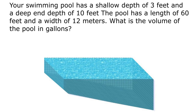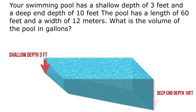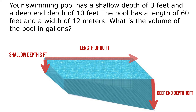Alright, let's go ahead and read our question on the volume of a rectangular pool. Your swimming pool has a shallow depth of 3 feet and a deep end of 10 feet. The pool has a length of 60 feet and a width of 12 meters. What is the volume in gallons?